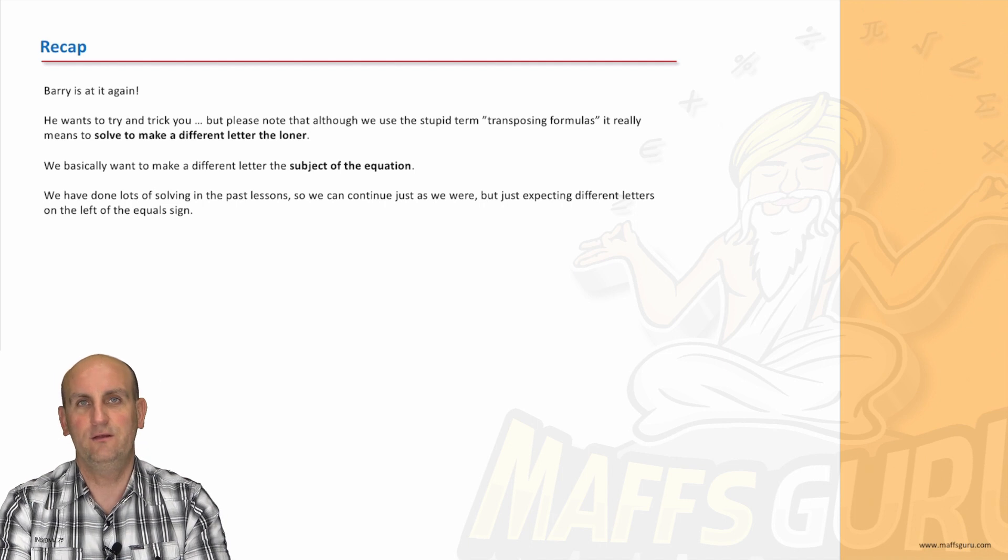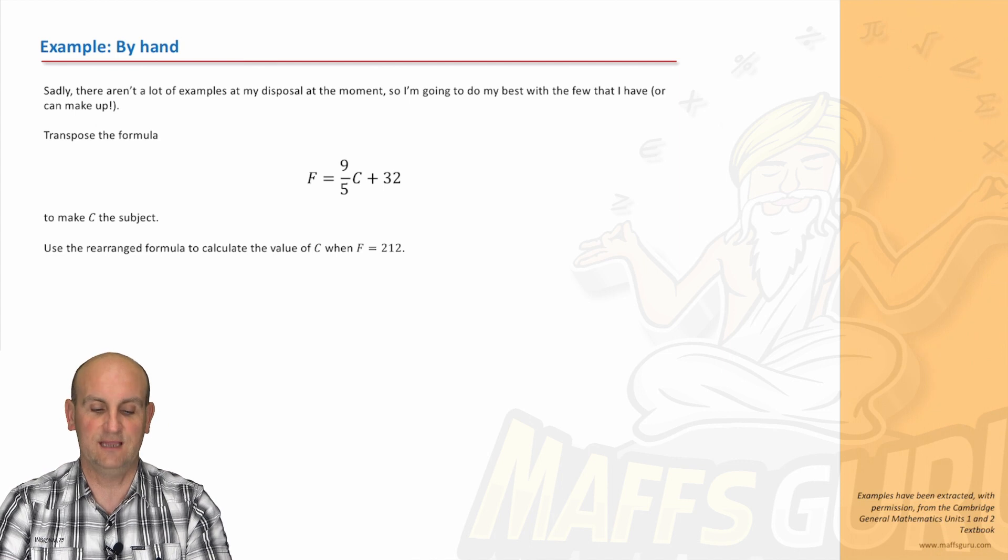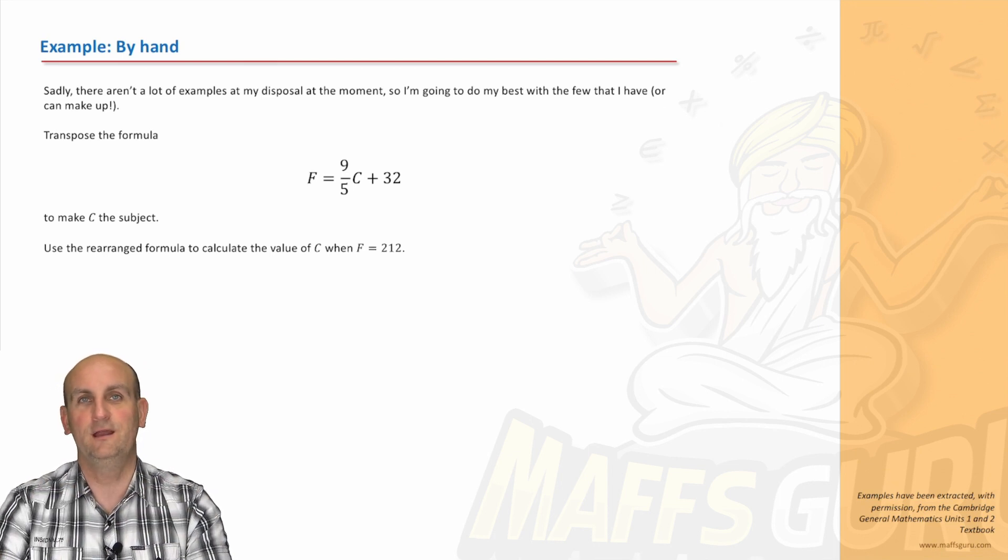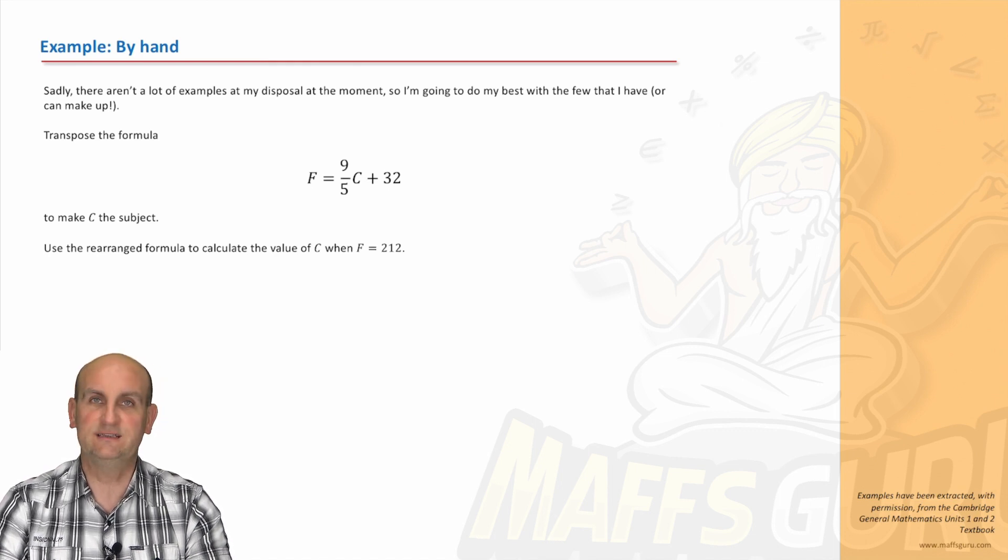the different thing on its own. How do you do that? Well, we can do it by unpacking, or strangely, guess what? Yes, you can use your CAS calculator. Now there's not a lot of examples at my disposal, but I'm going to use the phenomenal Cambridge resource with their permission to actually put my questions up.